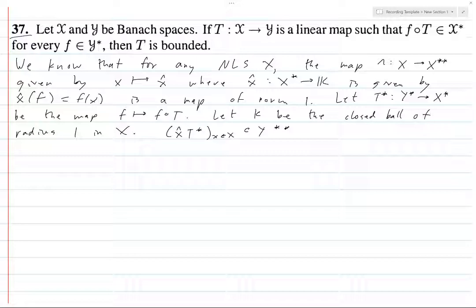So when you send an element through T*, it goes from Y* to X*, then x̂ sends it from X* to K, so it goes from Y* to K, and so it's a linear functional on Y. Linearity is straightforward, it's a composition of linear maps. And this is linear because it's composition. So this is in Y**.